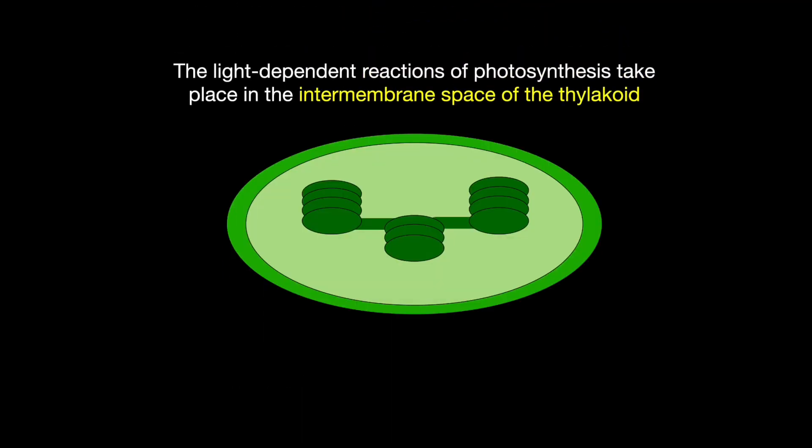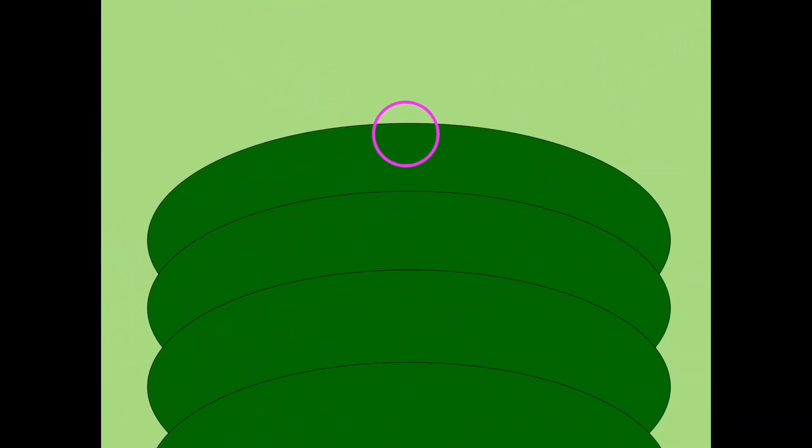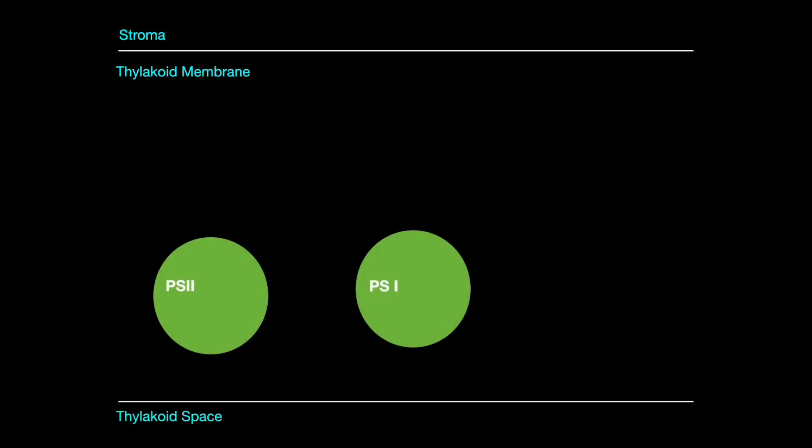The light-dependent reactions of photosynthesis take place on the intermembrane space of the thylakoid. Here we can see that circled in pink and if we zoom in we can start to look at some of the details. The intermembrane space is the space within the thylakoid membrane, also referred to as the lumen of the thylakoid. This is where we can find photosystems 1 and 2.